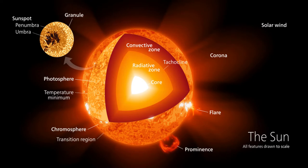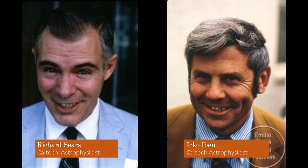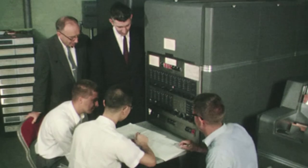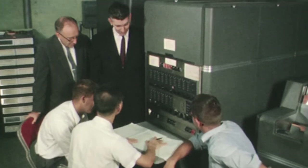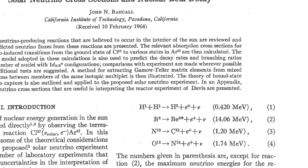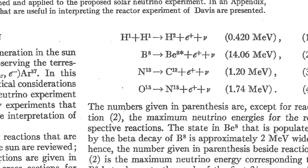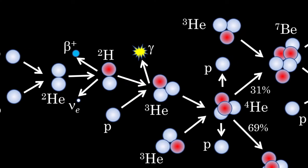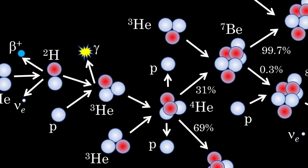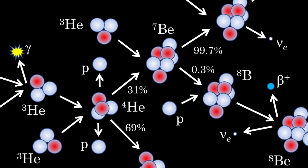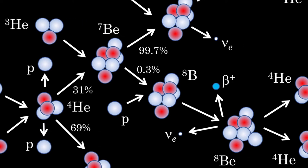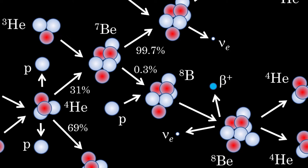Bacall agrees to help Davis. Soon after accepting the task, Bacall realizes there are no solar models that calculate neutrino fluxes. So he gets help from two stellar modeling experts at Caltech, Dick Sears and Ikko Iben, and in 1963, they piece together a model for calculating the expected solar neutrino flux for Davis. The model uses Bethe's series of nuclear fusion reactions, believed to be taking place in the core of the Sun, to generate the neutrino fluxes produced at various energies. Bethe proposed that, starting with two protons colliding and fusing together, a series of reactions that generate most of the Sun's energy follow, including the one involving the formation of beryllium-7. These reactions ultimately convert the Sun's hydrogen into helium, producing several neutrinos in the process.